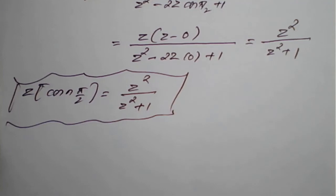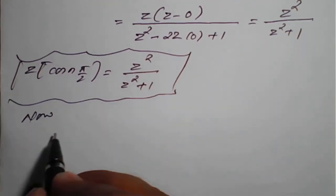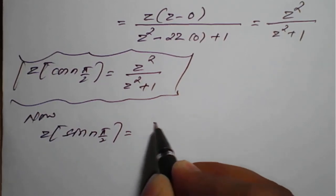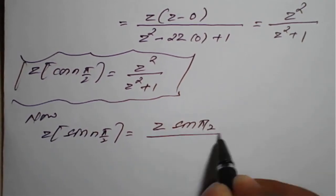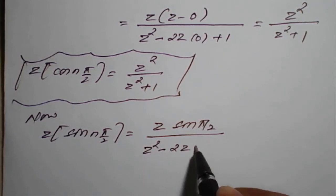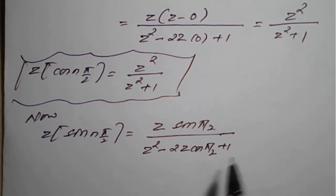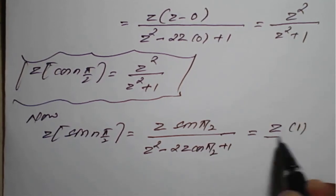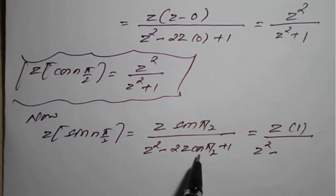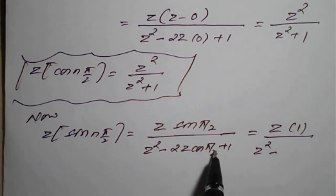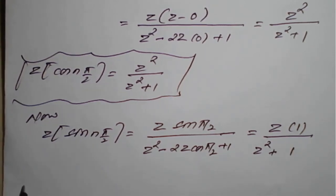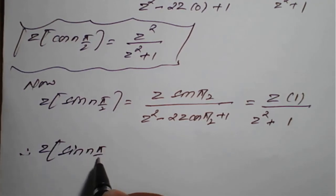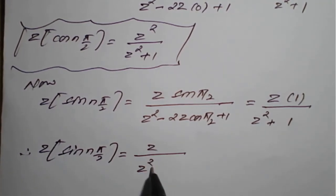Now finding Z{sin(nπ/2)}: using the standard formula, it equals z·sin(π/2) / (z² − 2z·cos(π/2) + 1). Since sin(π/2) = sin 90° = 1 and cos(π/2) = 0, this simplifies to z / (z² + 1).